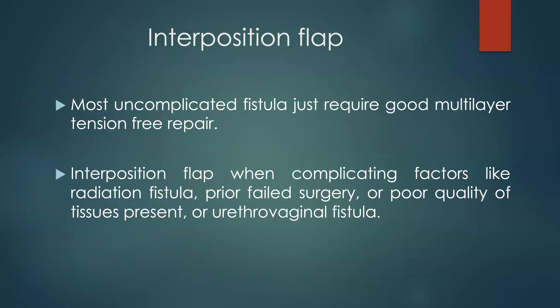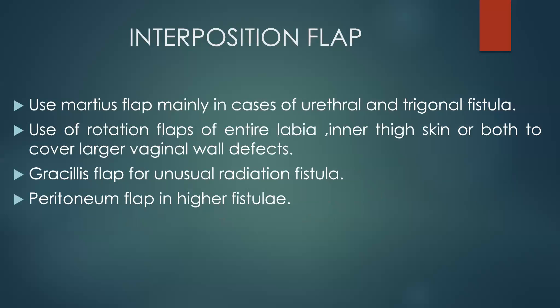The transvaginal approach offers advantages: avoidance of laparotomy and its morbidity, shorter operative time, early recovery, short hospital stay, minimal postoperative pain, minimal blood loss, avoids opening the bladder, and concomitant anti-incontinence surgery is possible. Disadvantages include vaginal shortening and stenosis, risk of inadequate closure due to limited space, and ureteric reimplantation or augmentation cystoplasty is not possible. The transabdominal approach can address associated conditions like ureterovaginal fistula, complex fistulas, augmentation cystoplasty, complicated fistulas, multiple attempts, and fistulas larger than 4 cm.